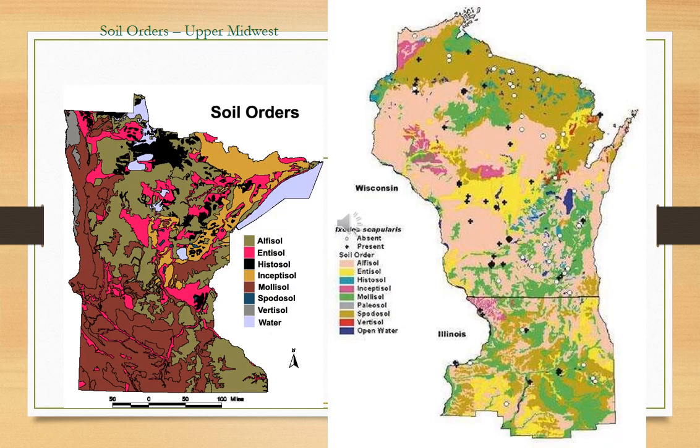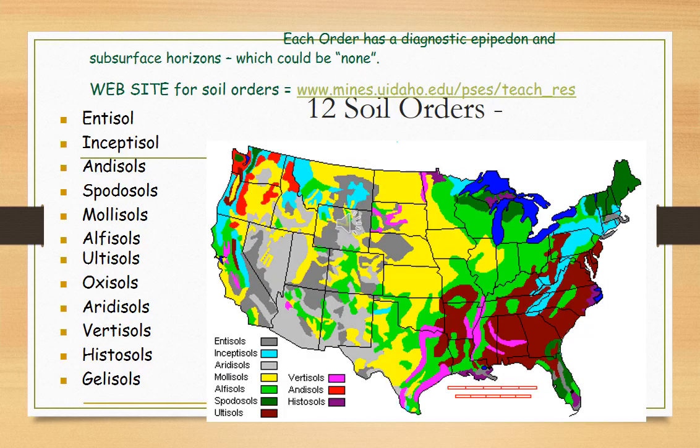Different colors show the different orders and suborders in the soil taxonomy, as you can see in this slide. Each order has a diagnostic epipedon and subsurface horizons. The 12 soil orders are: Entisols, Inceptisols, Andisols, Spodosols, Mollisols, Alfisols, Ultisols, Oxisols, Aridisols, Vertisols, and Histosols. These different colors showing different soil orders will be discussed in the next session.